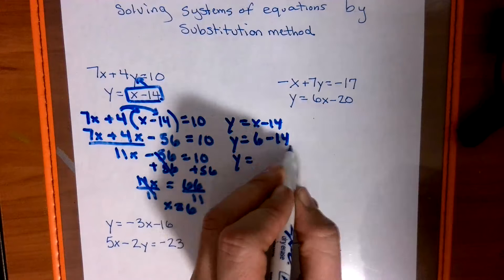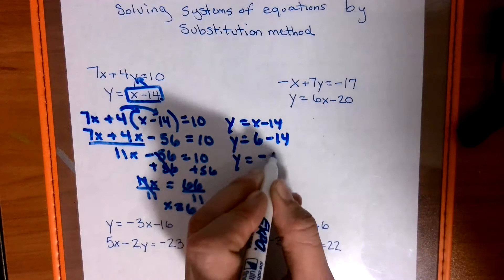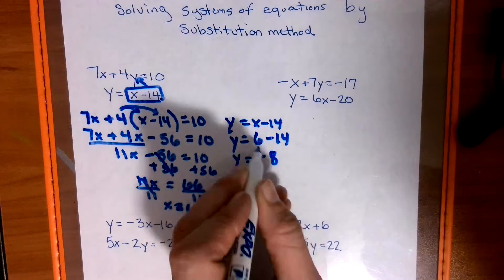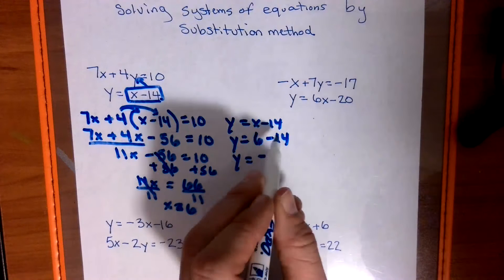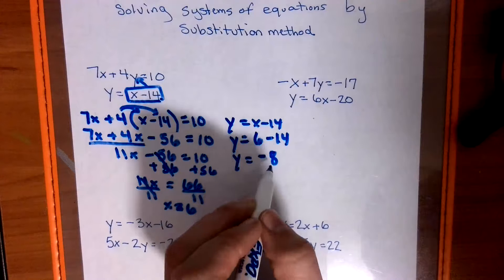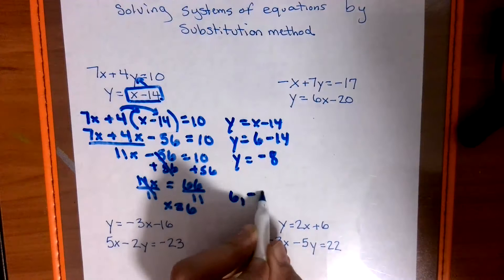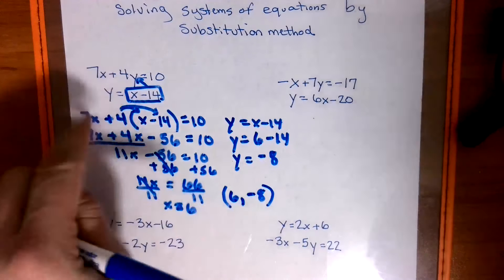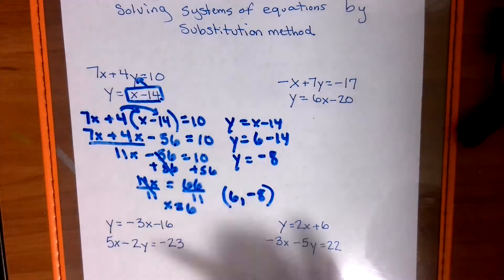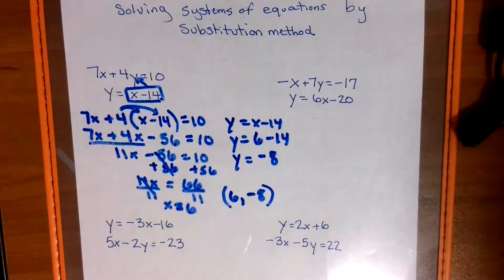And we solve for y this time. So we have 6 take away 14. So 6 take away 14 means we're going to owe and we're going to owe 8 because 8 and 6 make 14. But 6 having $6 and owing 14 means you owe 8. So we have a positive 6 as the x value and a negative 8 as the y value. And if we were to graph these two, that's the point of intersection. That is all for one problem of substitution.